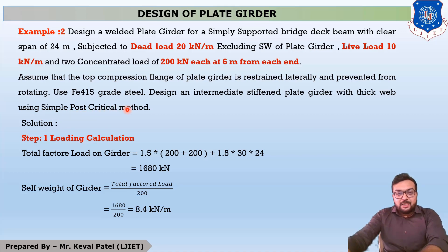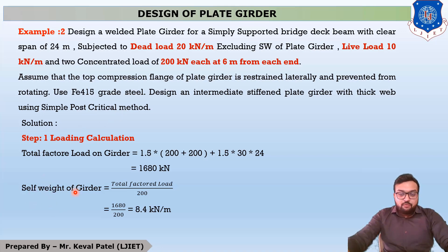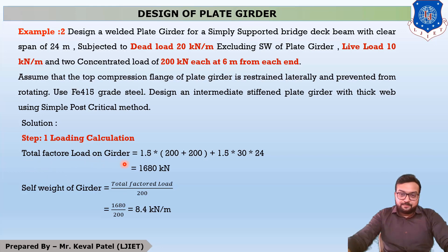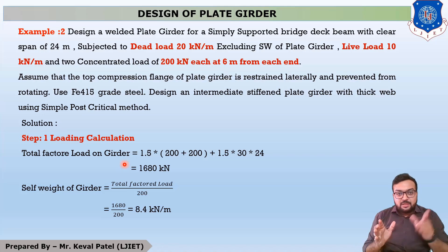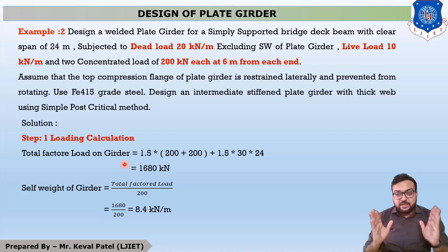Step 1 is load calculation. First, find the self-weight of the plate girder using the equation: small w = W/200, where capital W is the total factored load on the girder. The given loads are 20 kN/m and 10 kN/m, giving a total UDL of 30 kN/m (unfactored) acting throughout the span.